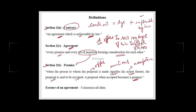Agreement is a broader concept because there are agreements which are enforceable by law and there are agreements which are not enforceable by law. All those agreements which are not enforceable by law are called social agreements. For example, if A invites B for his birthday bash and cancels it at the last minute, B cannot go to the court of law because this falls under social agreements. Social agreements are not enforceable by law and will not be a contract.